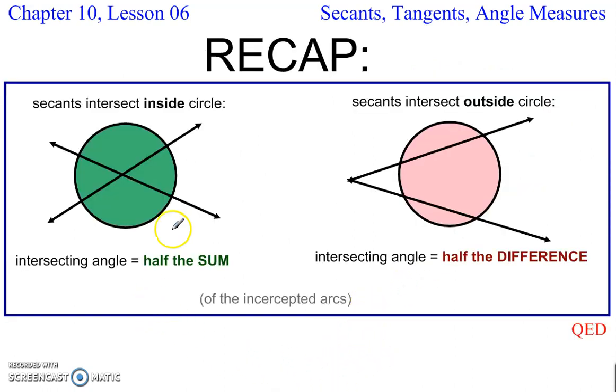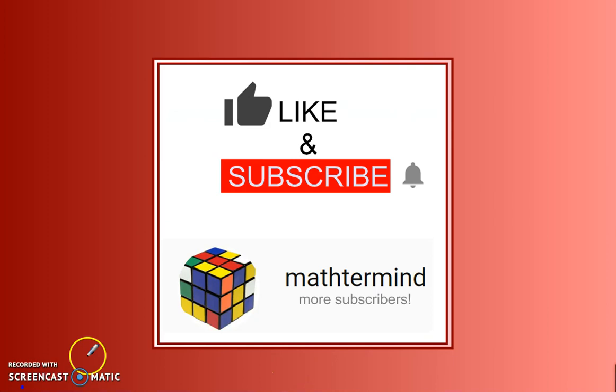Here's a quick recap. If they intersect inside, then just find the average, or it's half the sum. If they intersect outside, whether it's secants, tangents, or a secant and a tangent, we find half the difference. And that's all there is to it.